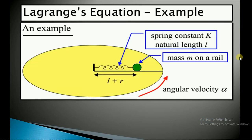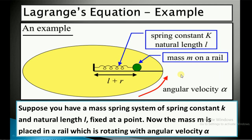First we will be doing one example. We have a mass-spring system where one side is fixed and the other side has a mass m. The natural length of the spring is l and the spring constant is k. The mass m is moving on a rail — a massless stick — which can rotate with a fixed angular velocity alpha.